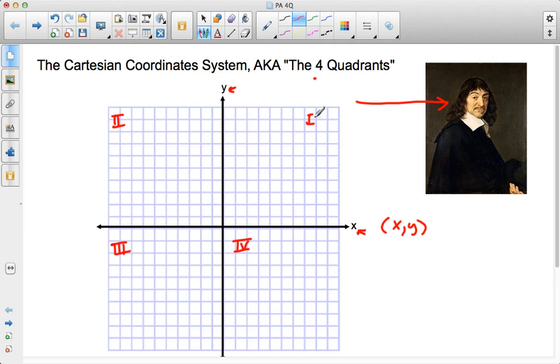First quadrant, second quadrant, third quadrant, fourth quadrant. Now, in the first quadrant, both your x value and your y value are positive.